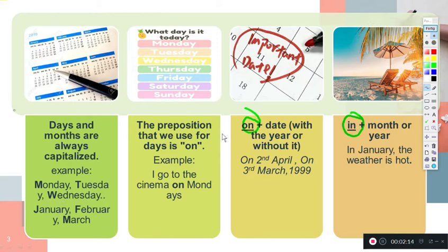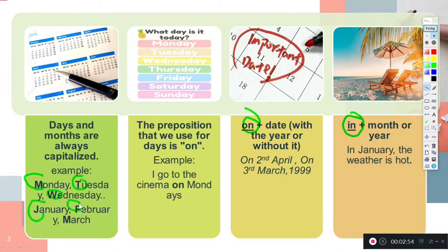Before explaining that, let me tell you that when we write about days and months, we need to use capital letters — that means uppercase letters. When we work with the days of the week and the months of the year, we are going to need capital letters. For example, Tuesday, Wednesday, January, February, March — each of the months and days of the week are written with a capital letter.